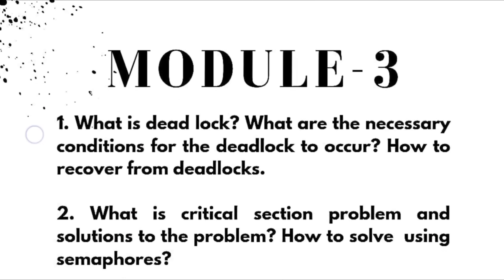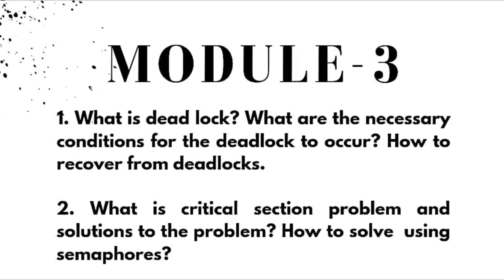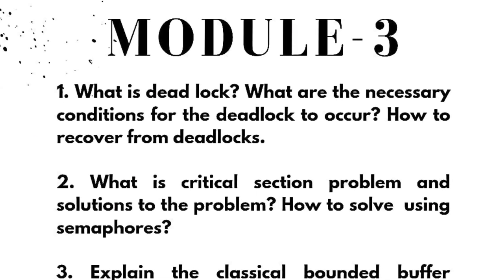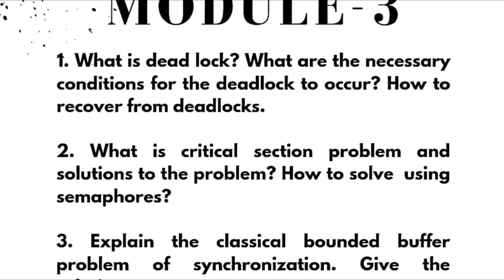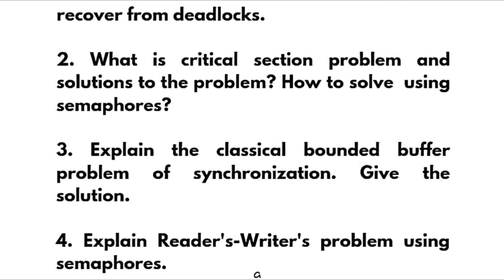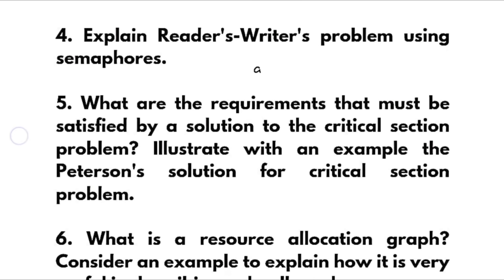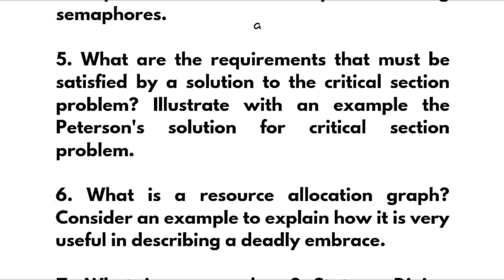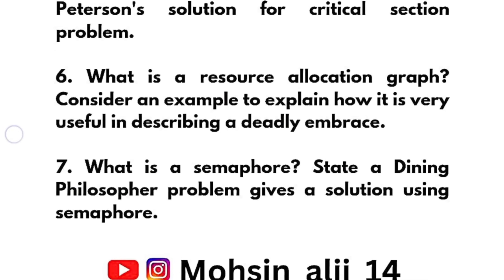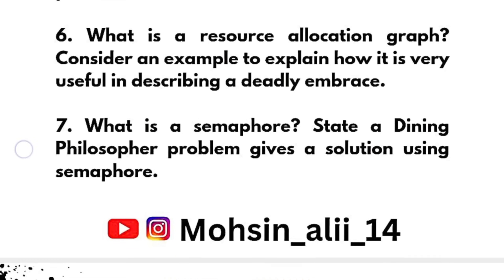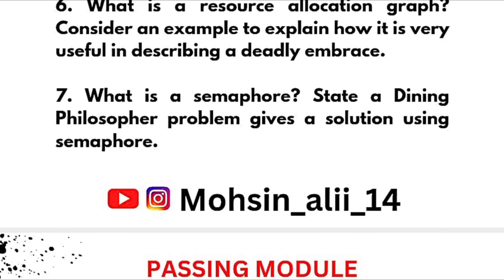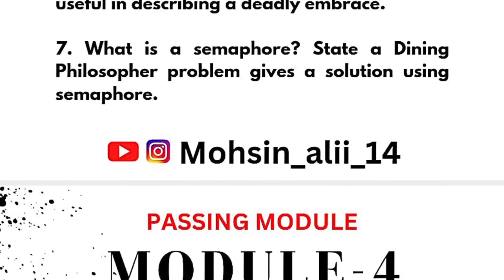Now coming to module 3 — I am not considering this into the passing module as some problems are there. What is deadlock? This is a super important question repeated most of the time. What are the necessary conditions for deadlock to occur and how to recover from deadlocks? What is the critical section problem and solutions — how to solve using semaphores? Explain the classical bounded buffer problem of synchronization. Explain the writer's problem using semaphores. What are the requirements for a solution to the critical section problem? Illustrate Peterson's solution. What is a resource allocation graph? What is a semaphore — state the dining philosopher problem and give a solution using semaphores. For problems, refer your previous year question papers.